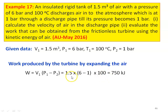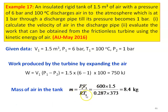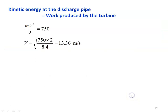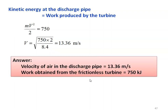Converting bar to kilo Pascal by multiplying by 100: V into 1.5 into 6 minus 1 into 100 equal to 750 kilojoules, which is the work done during the process. Mass of air in the tank: M equal to P1 divided by R into T1, equal to 600 into 1.5 divided by 0.287 into 373, equal to 8.4 kilograms. Kinetic energy at the discharge pipe equals work done: M·v²/2 equal to 750, so velocity V equal to square root of 750 into 2 divided by 8.4, equal to 13.36 meters per second. Velocity of air in the discharge pipe is 13.36 meters per second and work obtained from the frictionless turbine is 750 kilojoules.